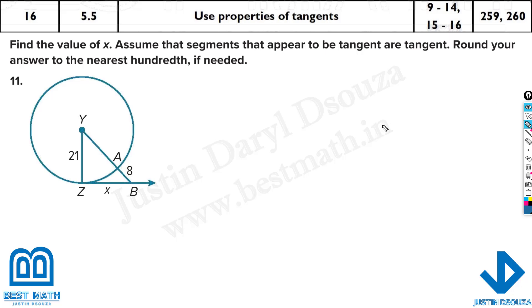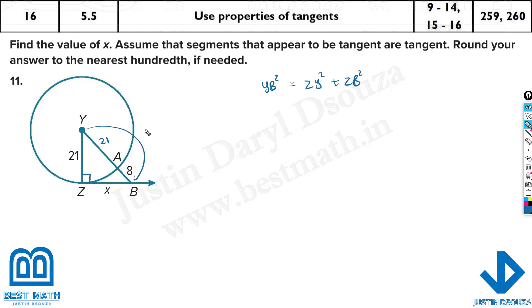Now for this problem — if you've understood the concept, try it yourself first. Here, ZB looks like the tangent, so we consider it the tangent. The hypotenuse is YB. So: YB squared equals ZY squared plus ZB squared. YB is 21 plus 9, which equals 29. So it's 29 squared equals 21 squared plus x squared.